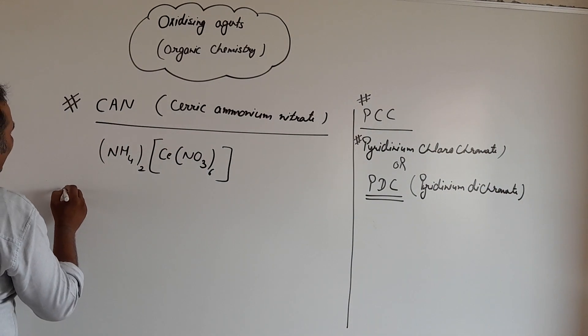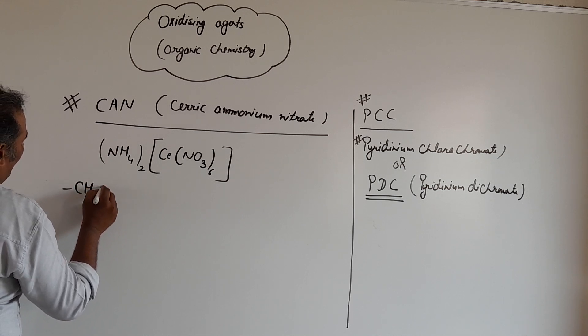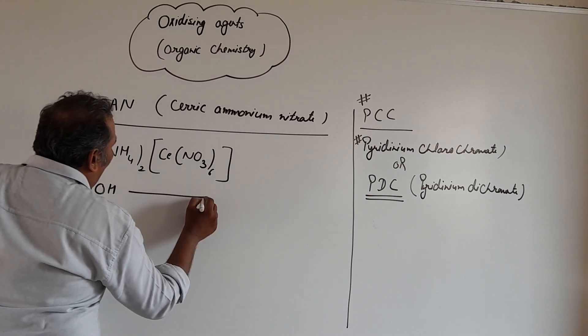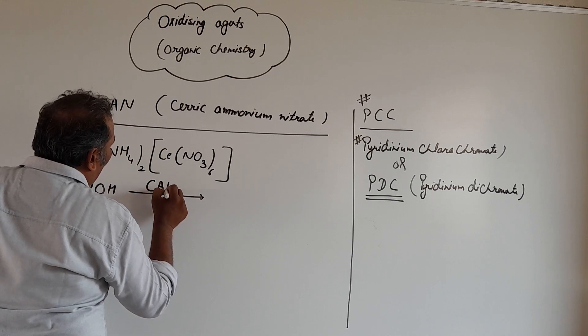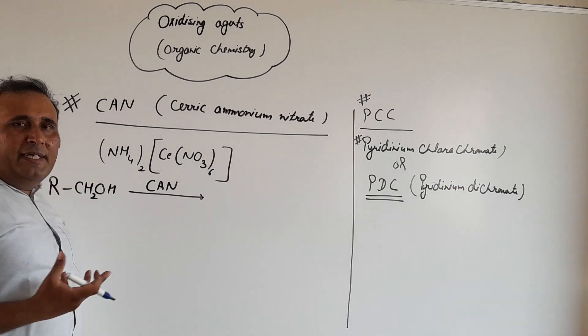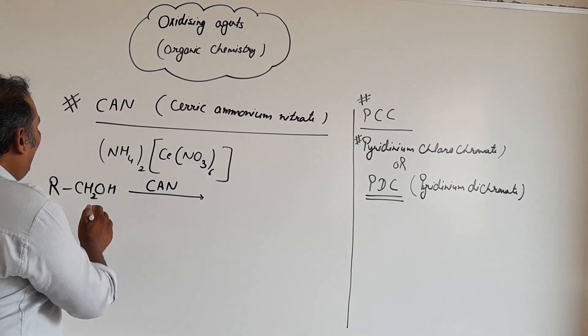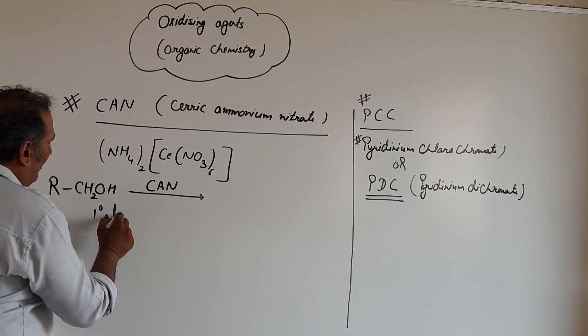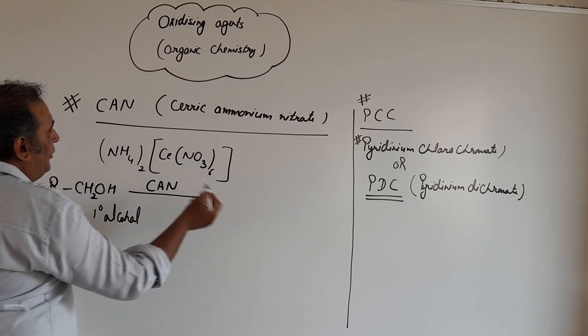If we have 1 degree alcohol, if we are using CAN Ceric Ammonium Nitrate, it is a selective oxidizing agent. It converts 1 degree alcohol into aldehyde.